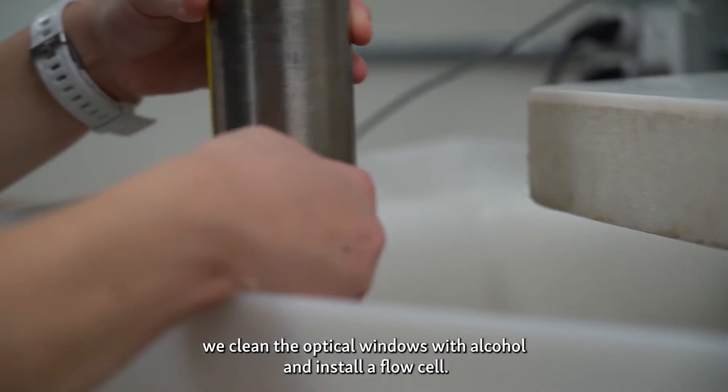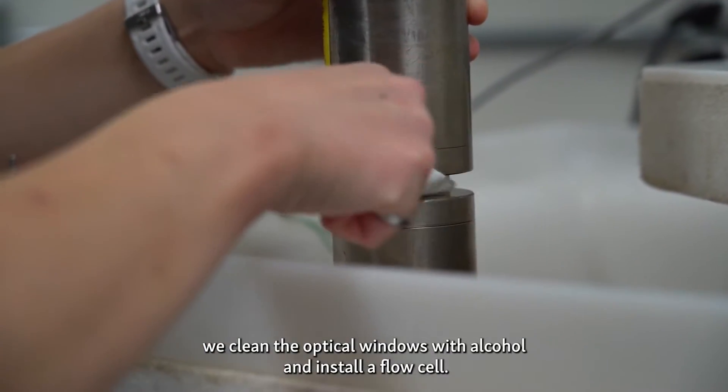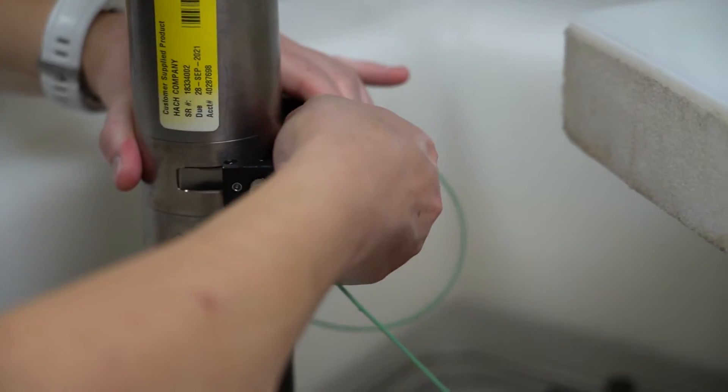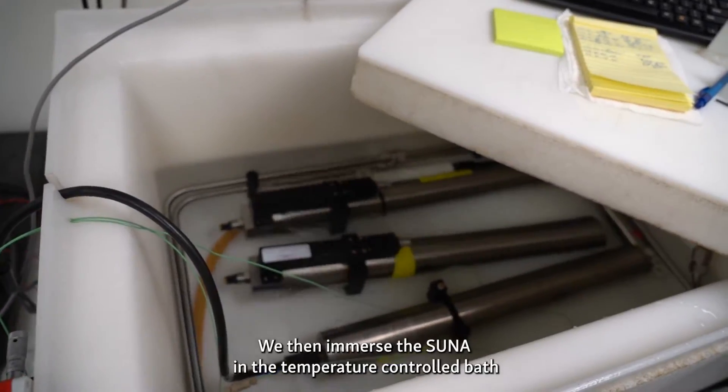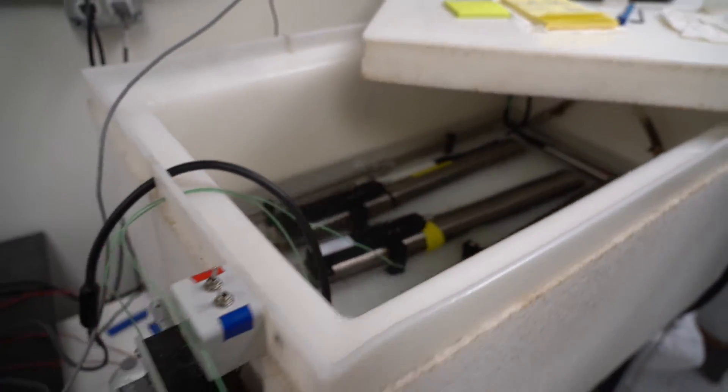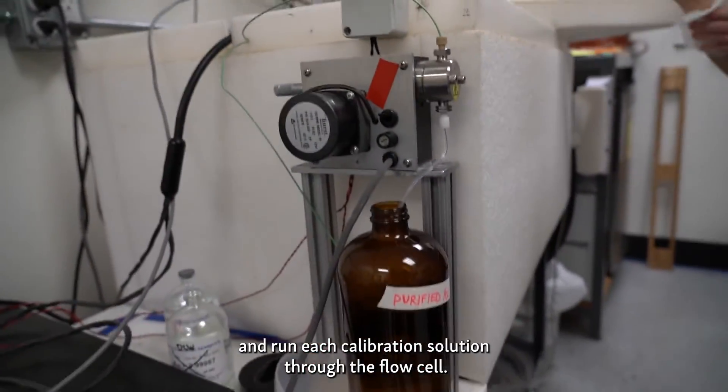At the beginning of the process, we clean the optical windows with alcohol and install a flow cell. We then immerse the SUNA in the temperature-controlled bath and run each calibration solution through the flow cell.